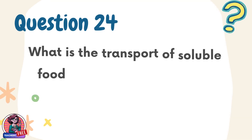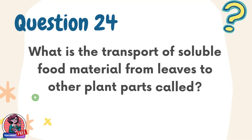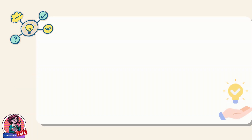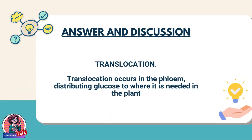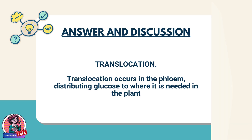Question 24. What is the transport of soluble food material from leaves to other plant parts called? Answer: Translocation. Translocation occurs in the phloem, distributing glucose to where it is needed in the plant.